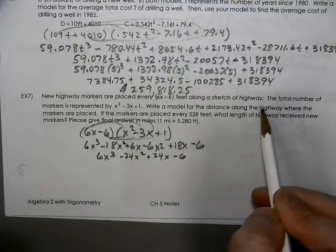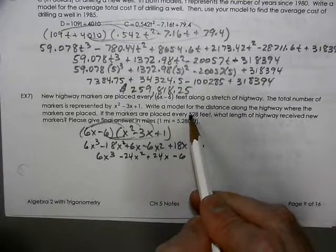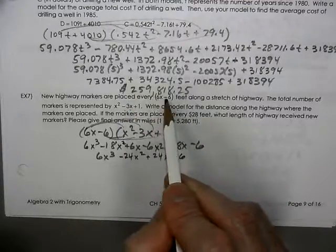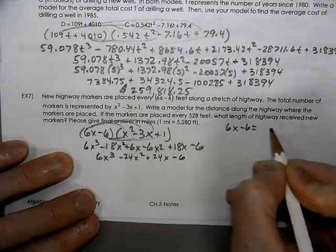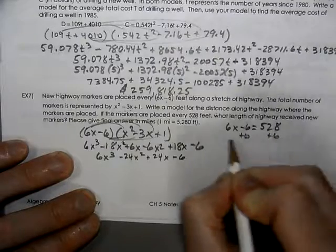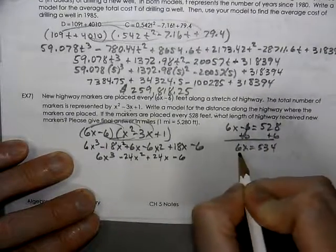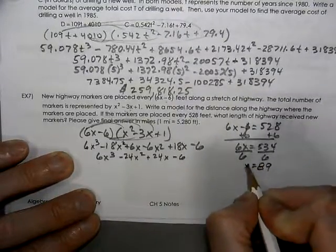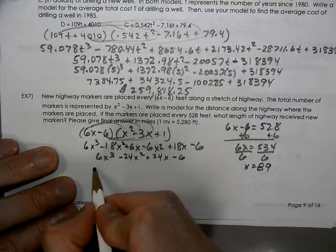So these are all unlike terms so we're done with that. That's our model of the distance of the highway. If the markers are placed every 528 feet, well this is the distance that they're stretched out. So if 6x minus 6 is supposed to be 528, we're going to add our 6, divide by our 6, we get 89.